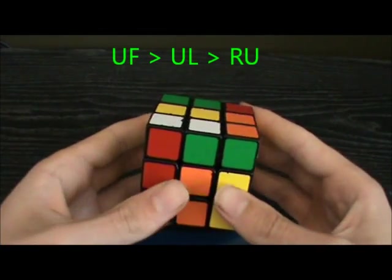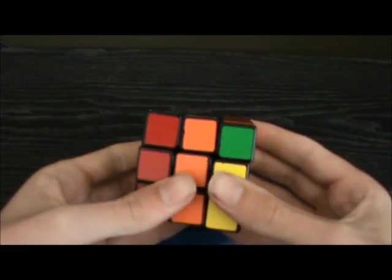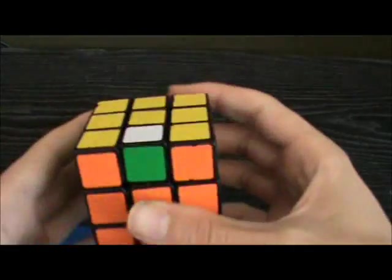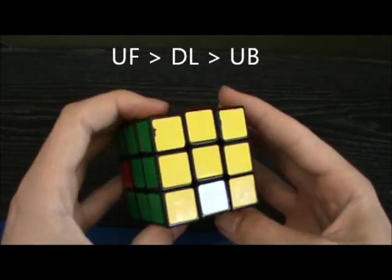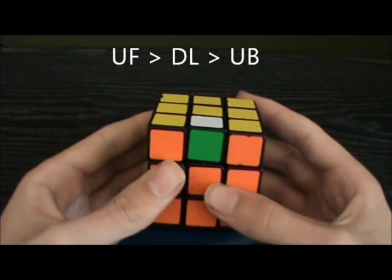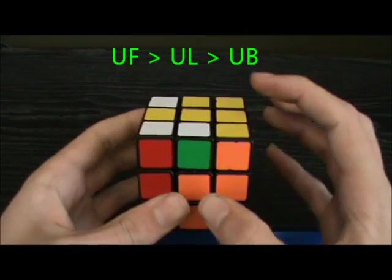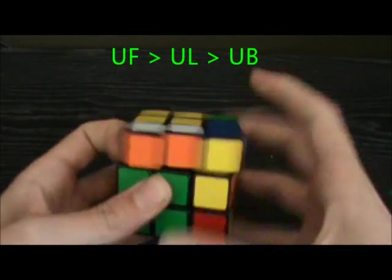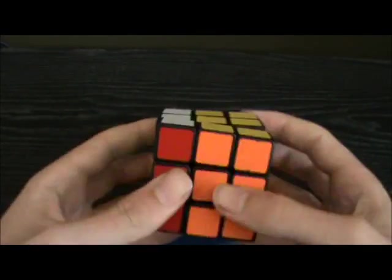Now the algorithm and undo. There is a one move setup to a U perm. Now it's UF to UL to UB. And undo.